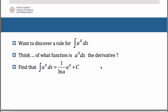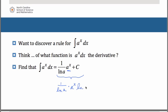Let's look at a little proof as to why this is. Since derivatives and anti-derivatives are inverses, if we take the derivative of the anti-derivative, we should get the integrand back again. So let's take the derivative of 1 over natural log of a times a to the x. The quantity 1 over natural log of a is a numerical coefficient that remains. The derivative of a to the x is a to the x times the natural log of a. The natural log of a's cancel out, leaving us with a to the x, which is our integrand.